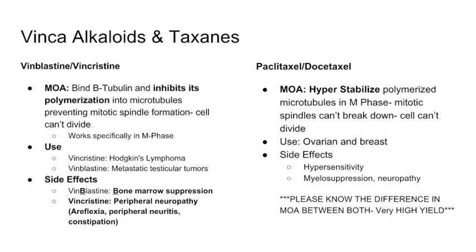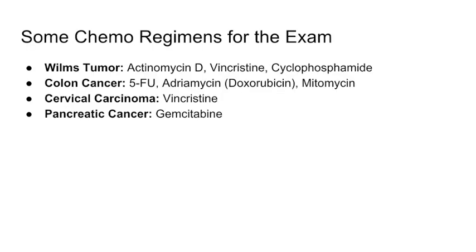It's critical to know the difference in mechanism between both classes. Vinblastine and vincristine inhibit polymerization of microtubules. Paclitaxel and docetaxel hyper-stabilize the already-polymerized microtubules. This distinction is very high yield. The taxanes are used for ovarian and breast cancer, and side effects include hypersensitivity reactions.